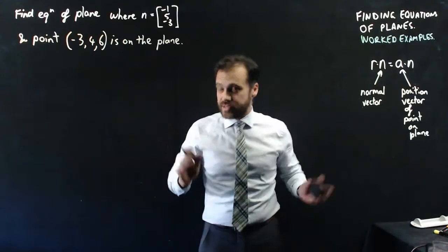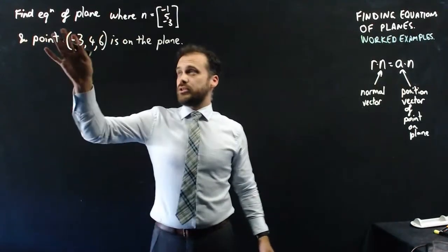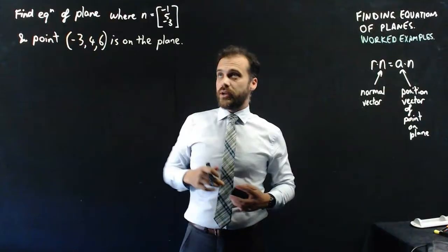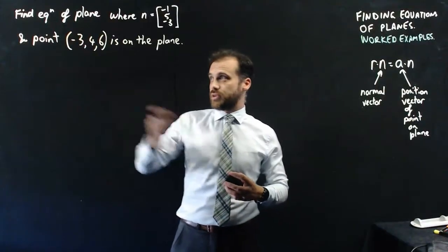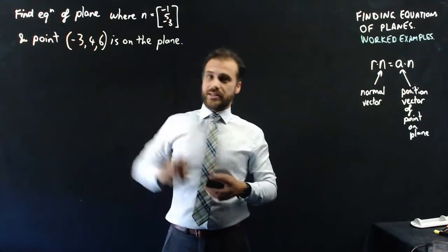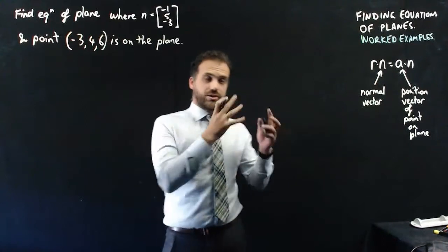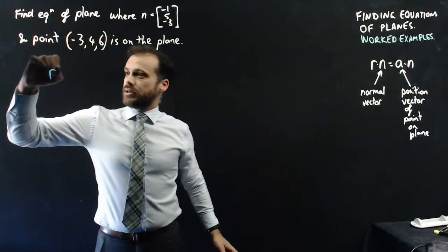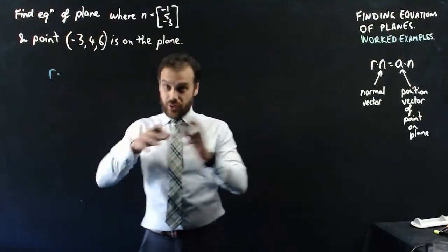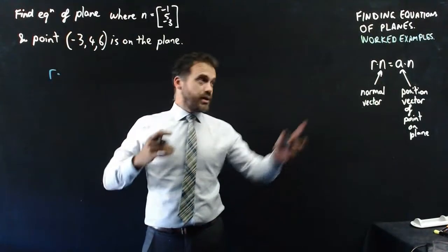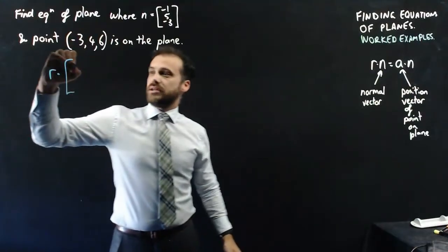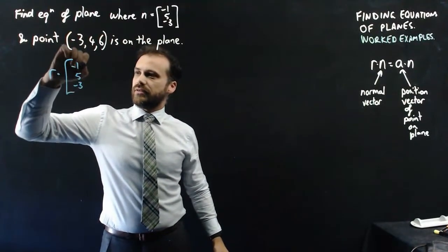First cab off the rank, the easiest one. Find the equation of a plane where the normal to the plane is (-1, 5, -3) and the point on the plane is (-3, 4, 6). So it's just going to be grabbing our formula and shoving in the stuff we know. r is all of the points, n is our normal vector: negative 1, 5, negative 3.